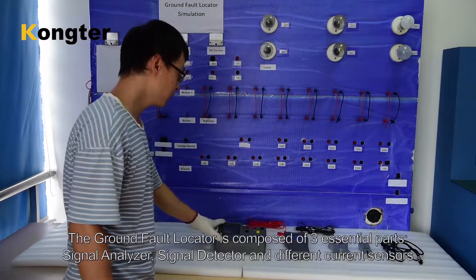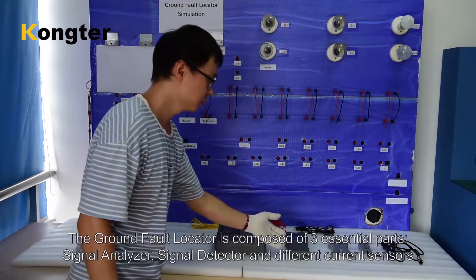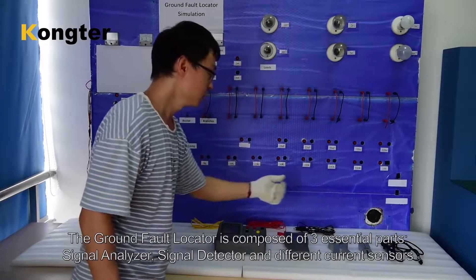The ground fault locator is composed of three essential parts: signal analyzer, signal detector and different current.